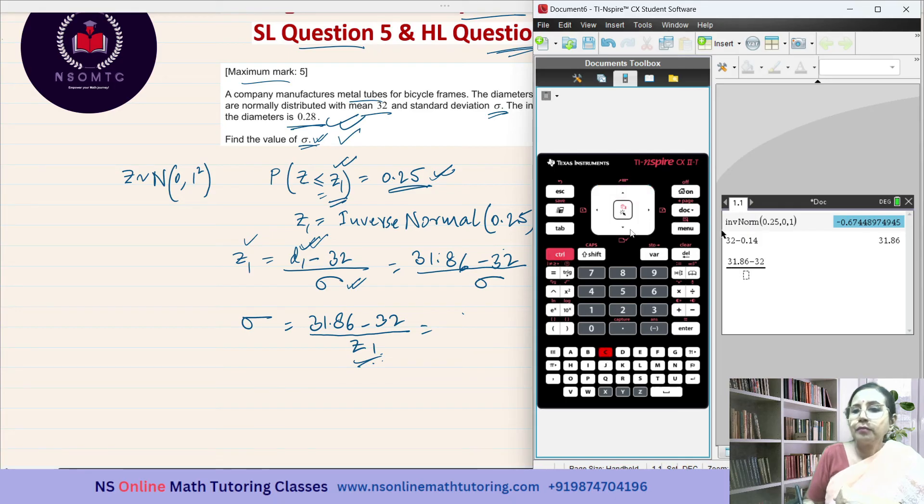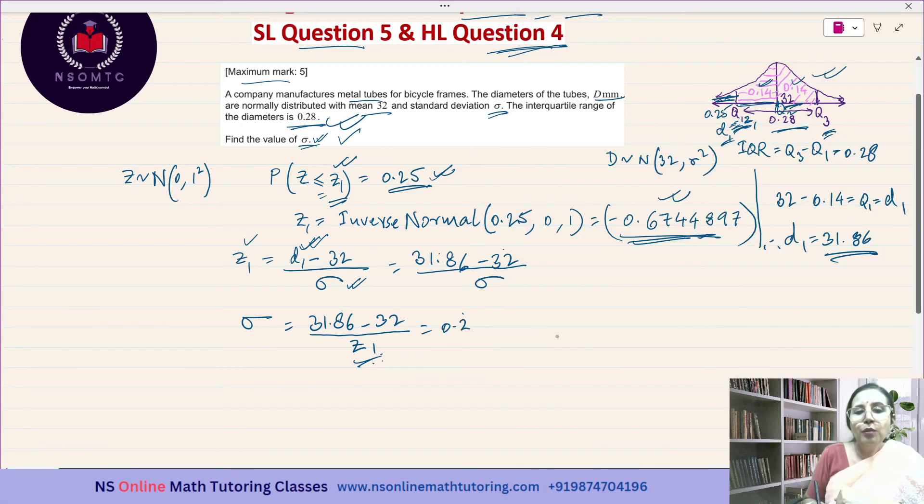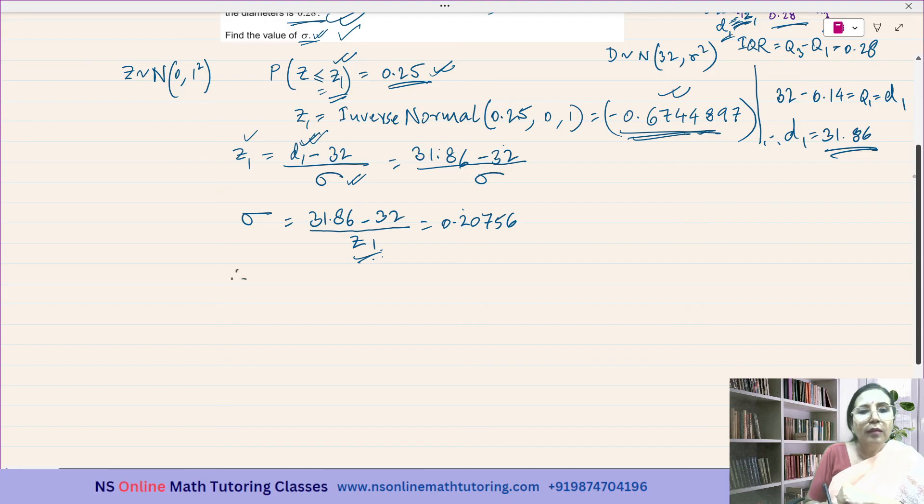It is 31.86 minus 32 over z1, and this is the value of z1. Let me copy this value. Enter. So the sigma is 0.20756. Therefore sigma equals 0.208 up to 3 significant figures.